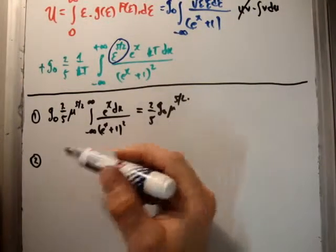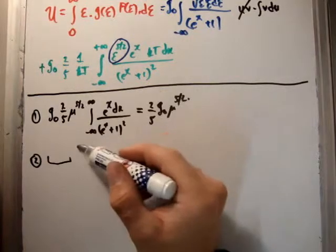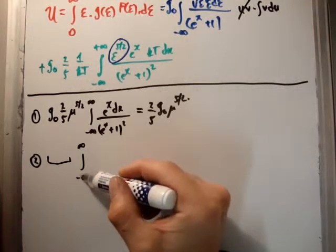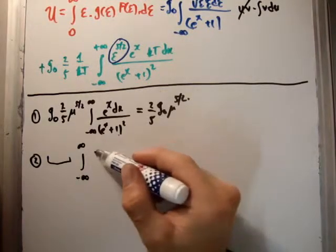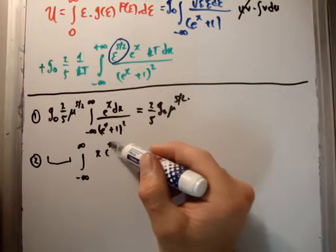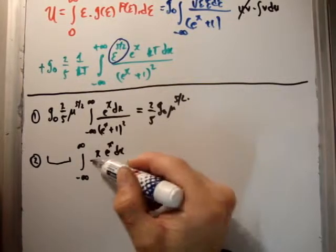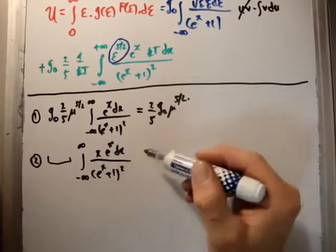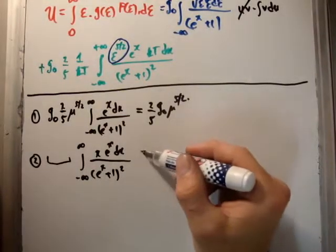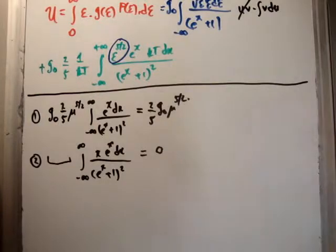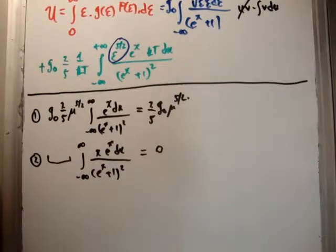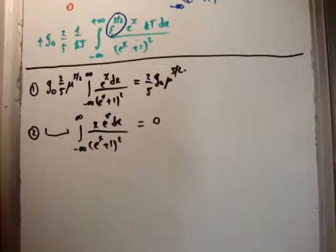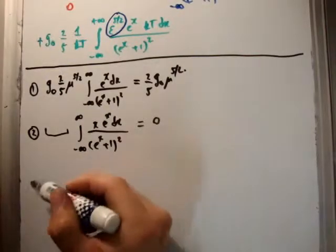This one here is just going to be a load of constants, which you're not going to bother writing. And we're going to get this infinite integral again of x times e to the x, integrated dx over e to the x plus 1 squared. For the same reason as the last time, this is an odd function in x. So if you integrate it across all space, you're going to get 0.